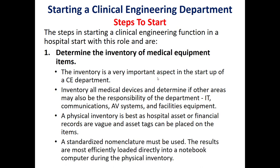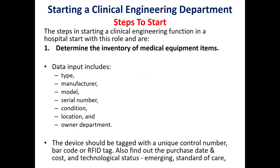A physical inventory is best; we should use a tagging system and standardized nomenclature. We should include data for each device, such as the type, manufacturer, model, serial number, condition, location, and owner department. Each device should be tagged with a unique control number — a barcode or an RFID tag, which stands for radio frequency identification. We should also include the purchase date, cost, and so on.